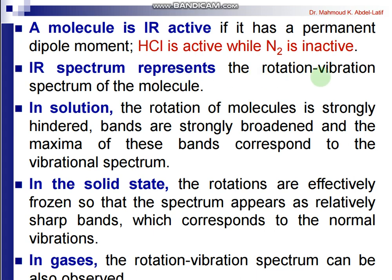The IR spectrum represents the rotation-vibrational spectrum of the molecule. In solution, the rotation of the molecule is strongly hindered by intermolecular forces, so bands are strongly broadened and the maxima correspond to vibrational spectra — essentially no rotation occurs. In the solid state, rotation is effectively frozen, so the spectrum appears as relatively sharp bands corresponding to normal vibrations. In gases, intermolecular forces are very weak, so the bands show the full rotation-vibrational spectrum.